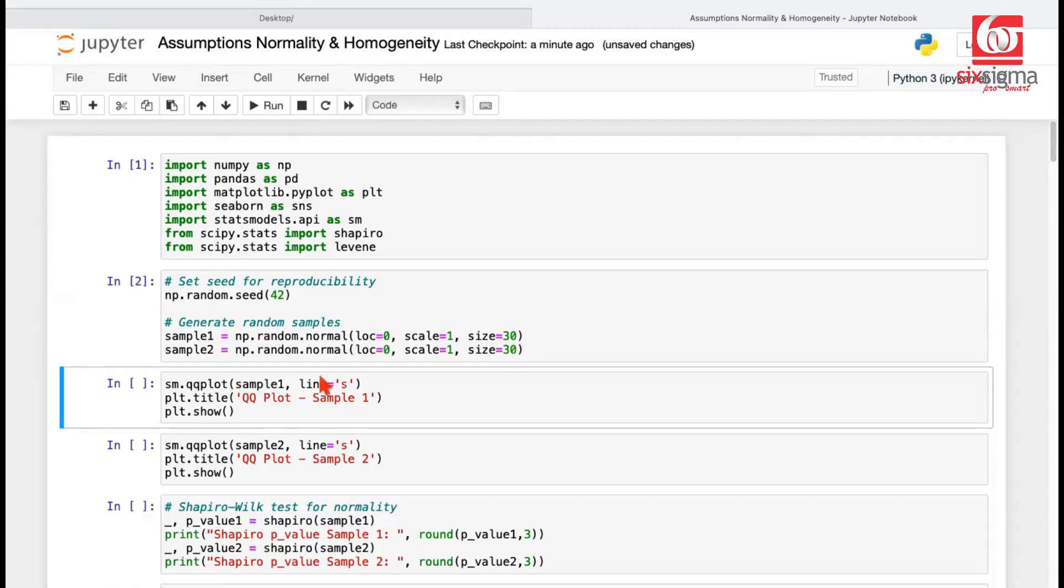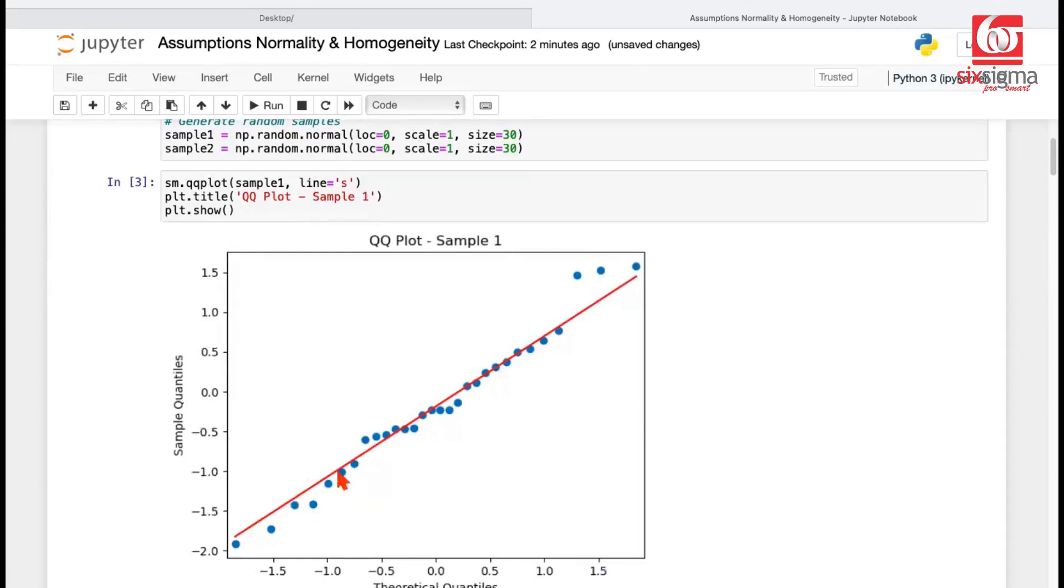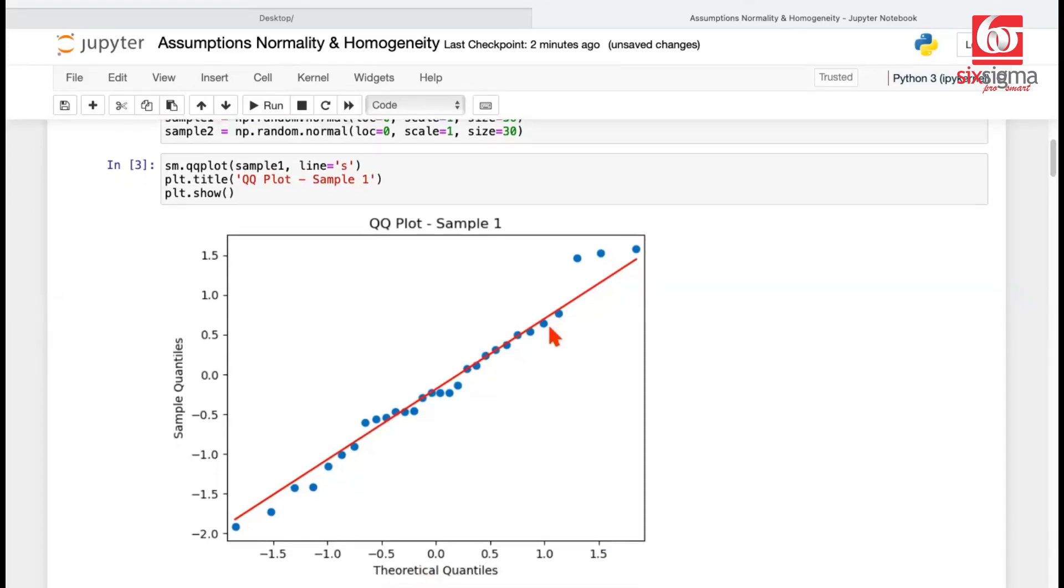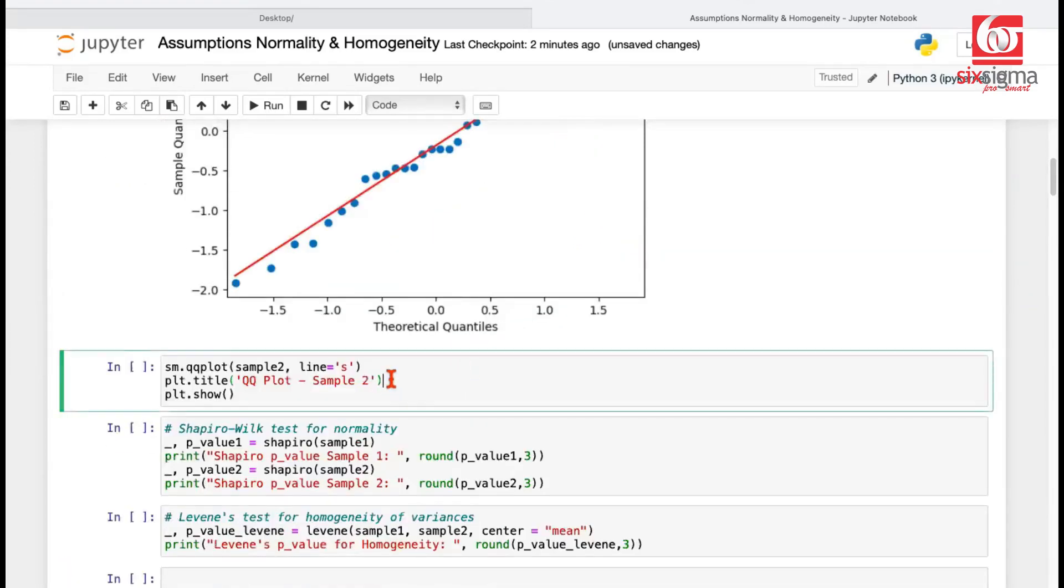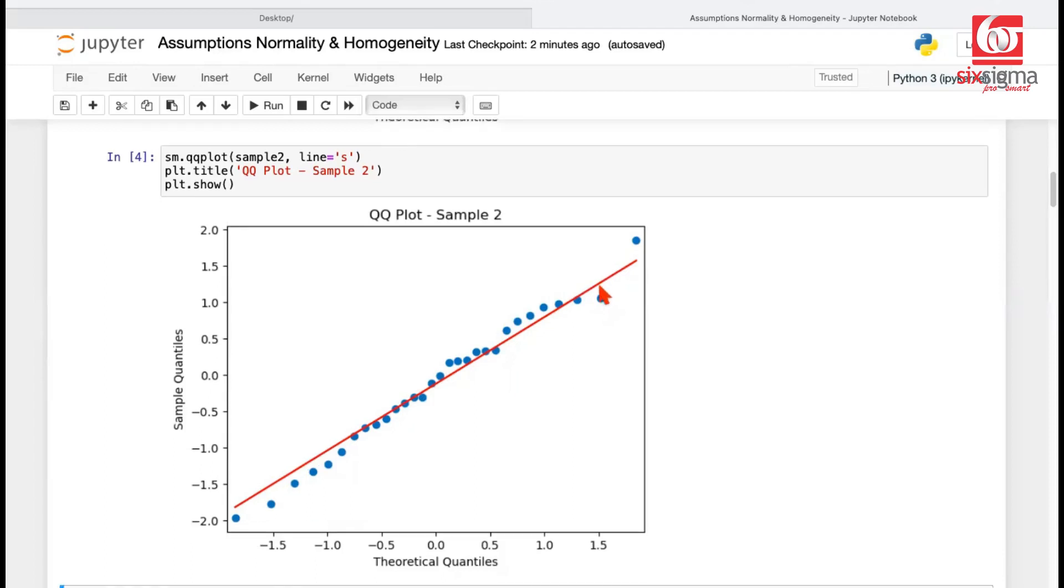Now let's check the qqplot for the first sample. This comes from the method called qqplot, which we're getting from the statsmodel library. Let me run this and you can see the qqplot, right? So this is a limited sample. We had about 30 observations only, but this looks decent. To further clarify, we'll of course perform a Shapiro test, right? But before that, let's also visualize the sample two. The sample two again looks like this. These are pretty close to the red line, which should have indicated an ideal theoretical distribution, normal distribution in this case.